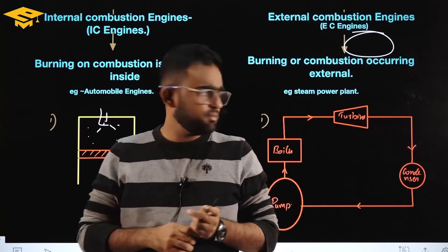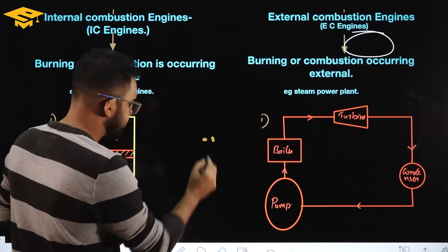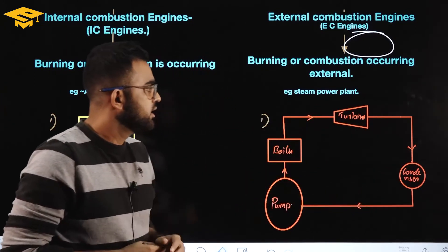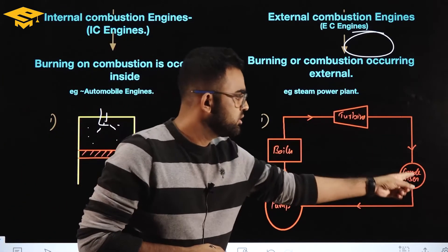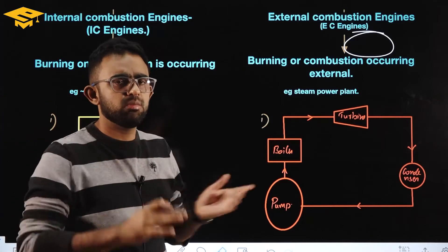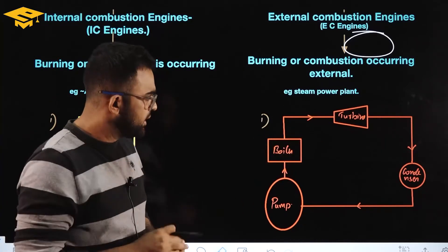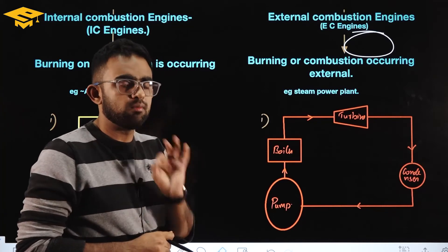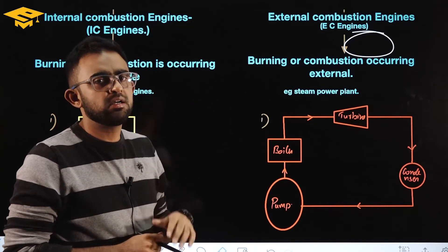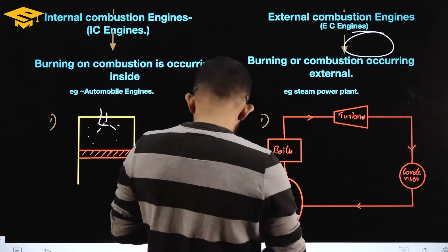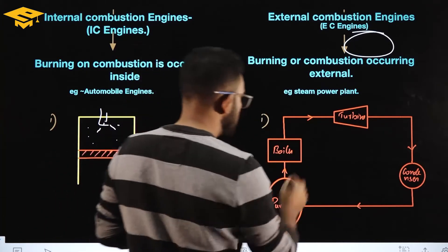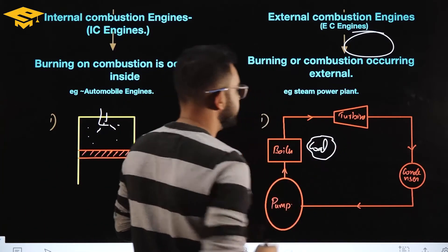For external combustion, the example is a steam power plant. The components of a steam power plant are: boiler, turbine, condenser, and pump. Let's understand how they work.